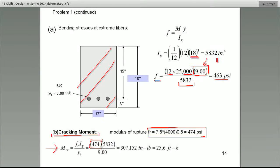The rupture is 7.5 times the square root of f prime c. In this case, f prime c is given to be 4,000. You substitute in the equation.